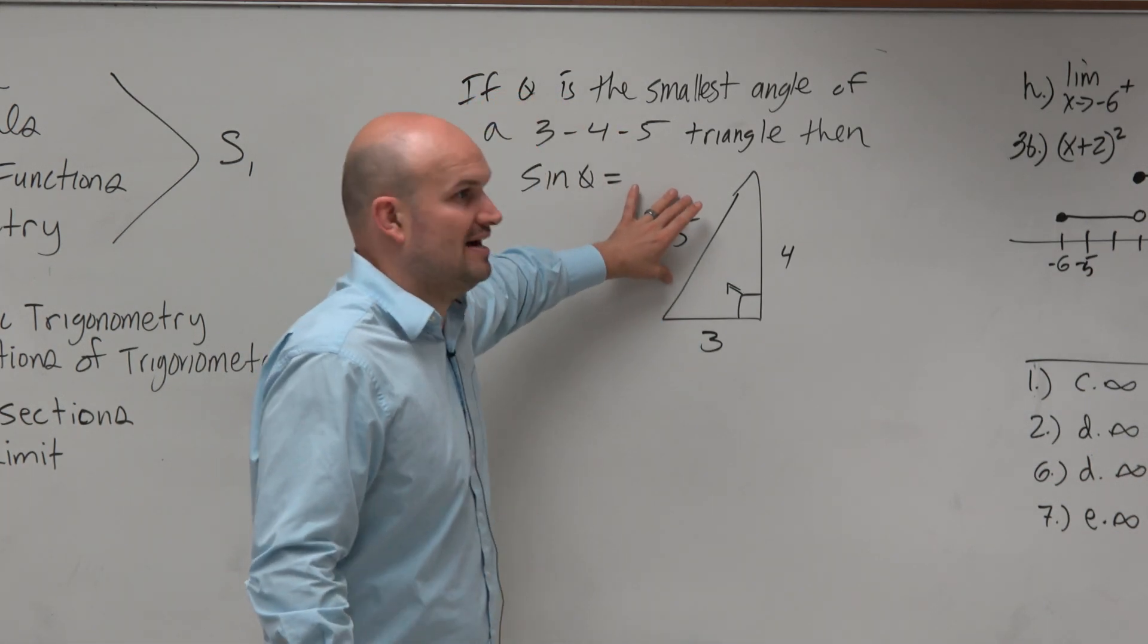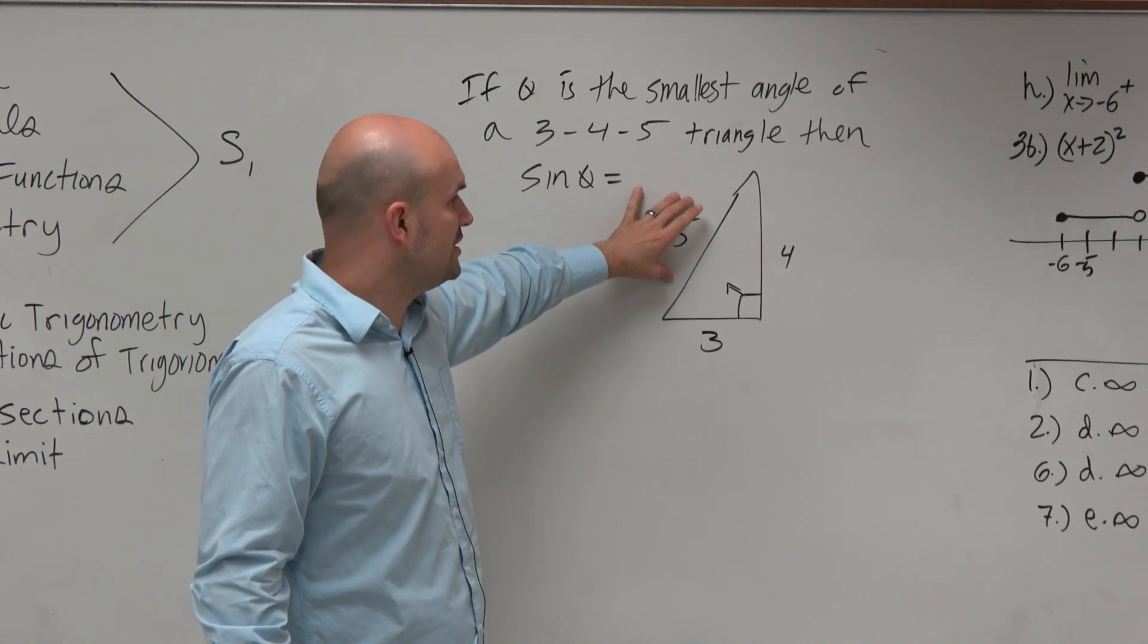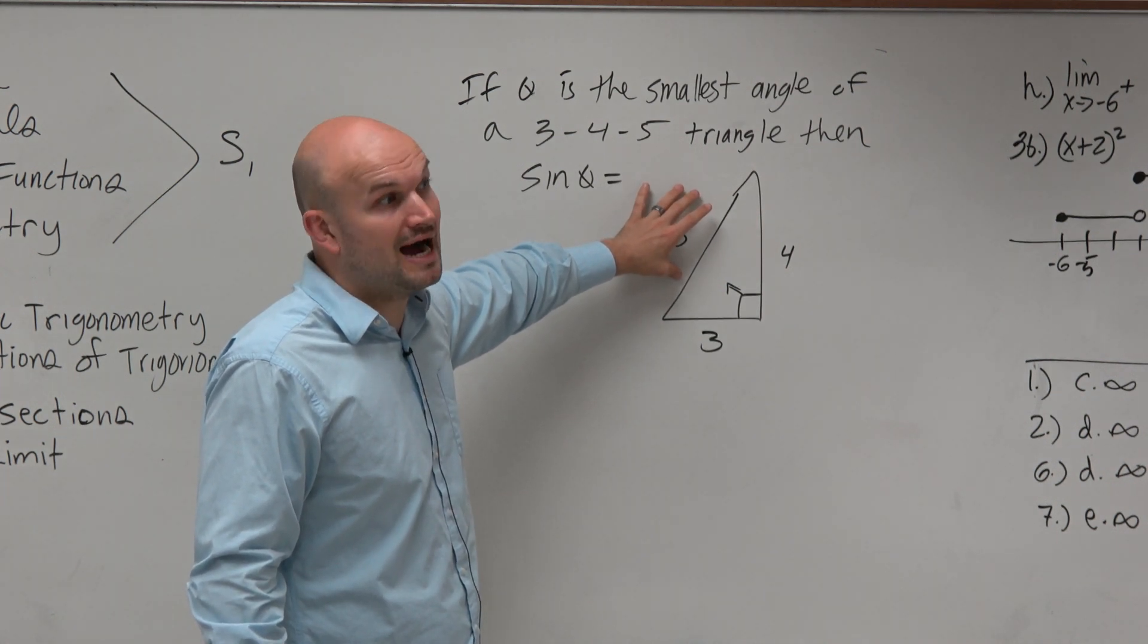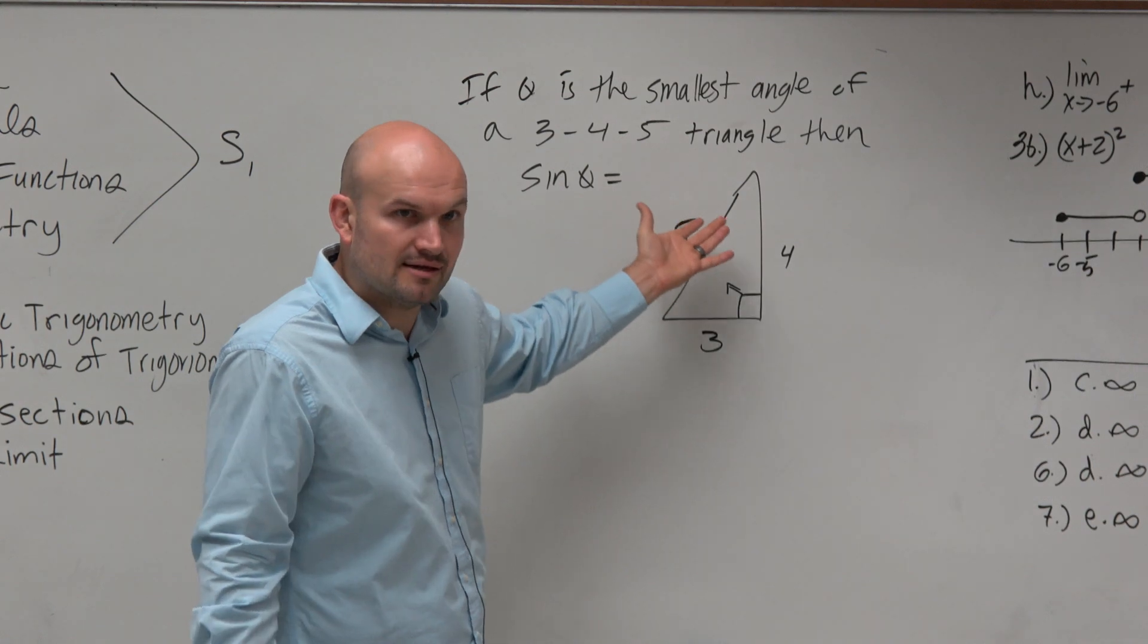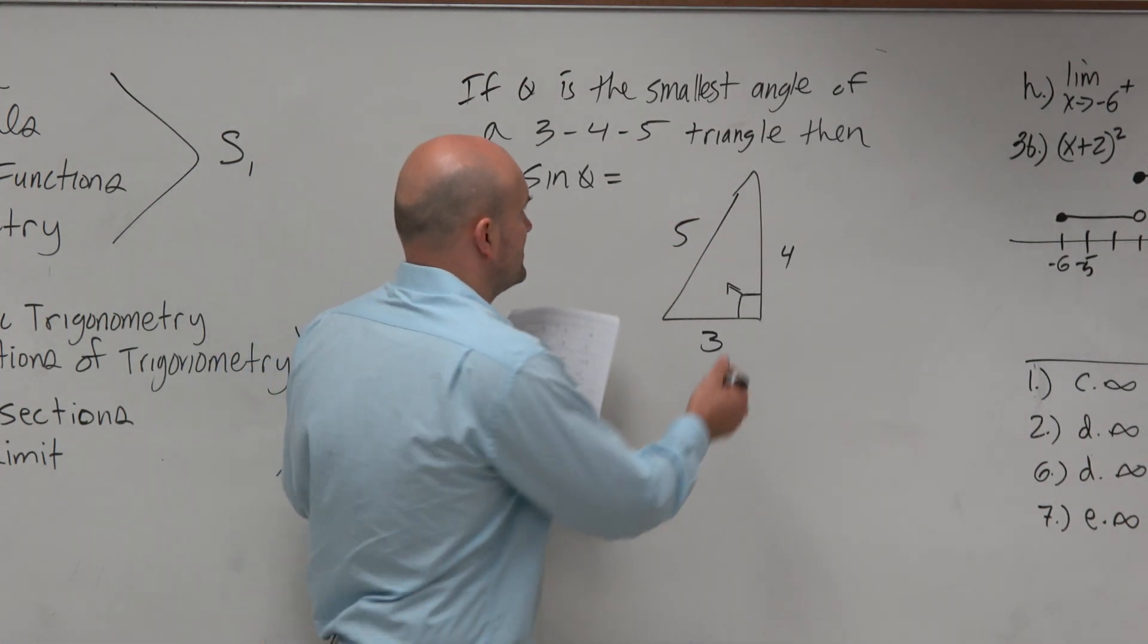We know the hypotenuse is 5, that's the biggest. Therefore, the smallest angle is going to be opposite of the smallest side. It projects to the smallest side. So here's theta.